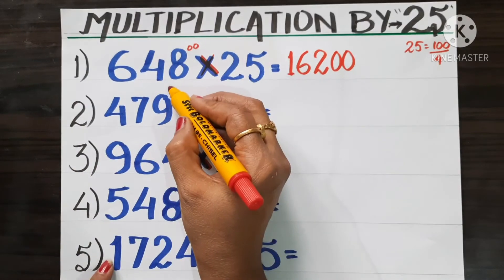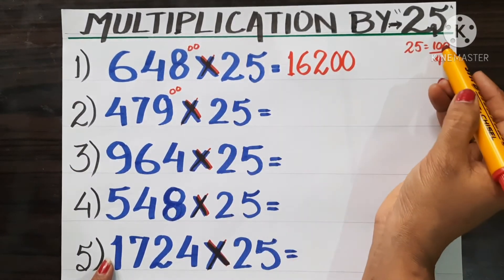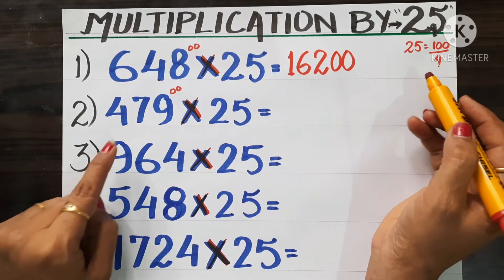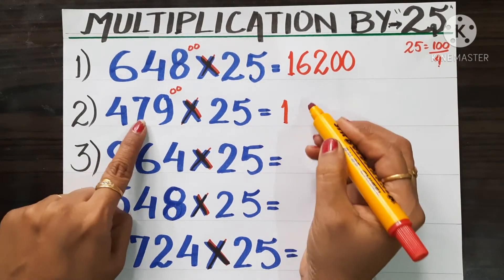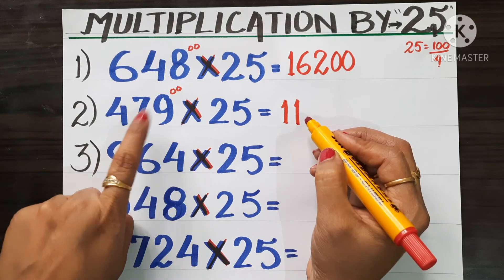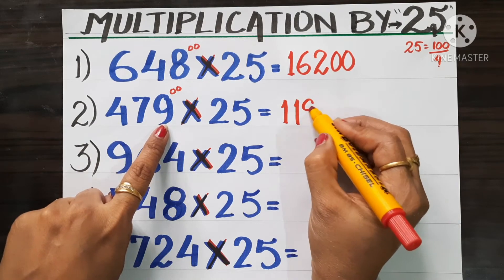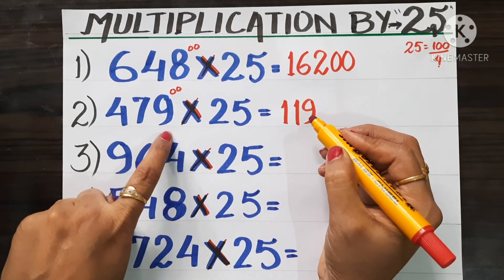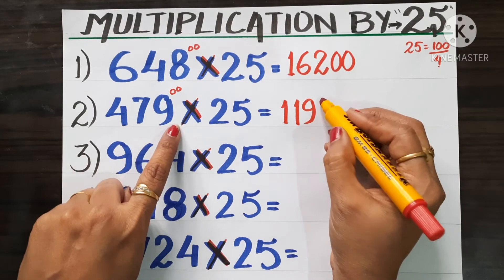4 ones are 4, again 4 ones are 4. Now 3 is remaining, and 9. So 4 nines are 36, 3 is remaining. 0, 4 sevens are 28, 2 is remaining.